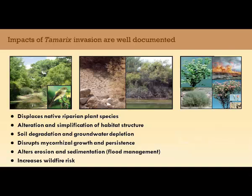The impacts of tamarisk invasion on ecosystem functions are well documented — displacing native species, altering habitat structure, in some cases increasing soil salinity, affecting groundwater supplies, and affecting local mycorrhizal communities. One of the key things I'll be talking about today is the tamarisk-fire cycle. The introduction and spread of tamarisk has introduced fire as a major disturbance to these riparian systems.